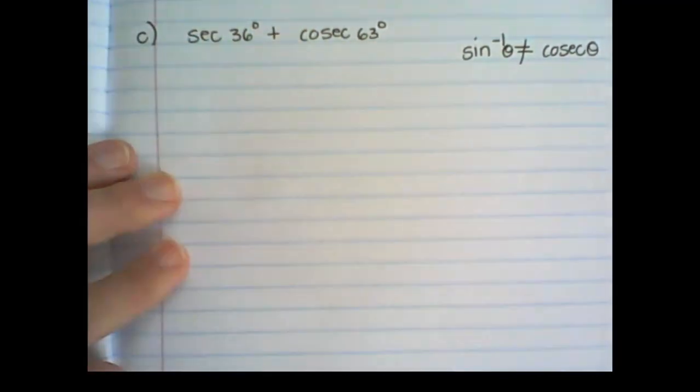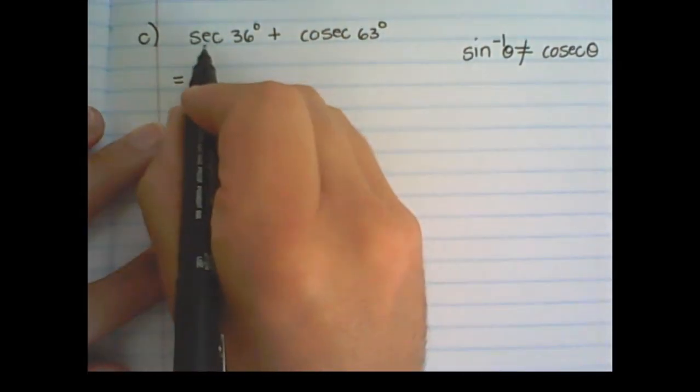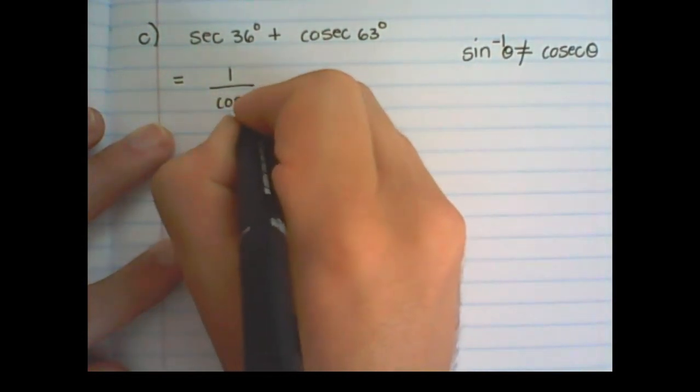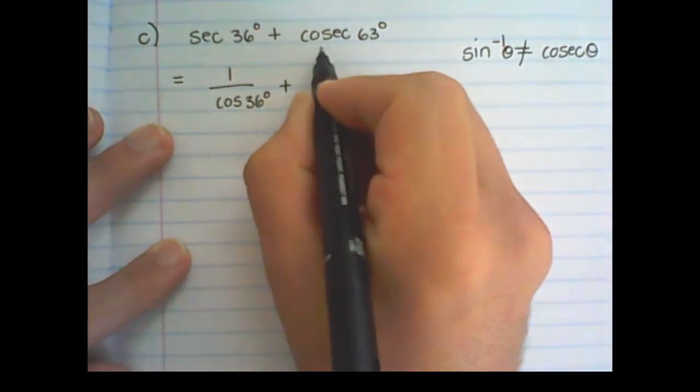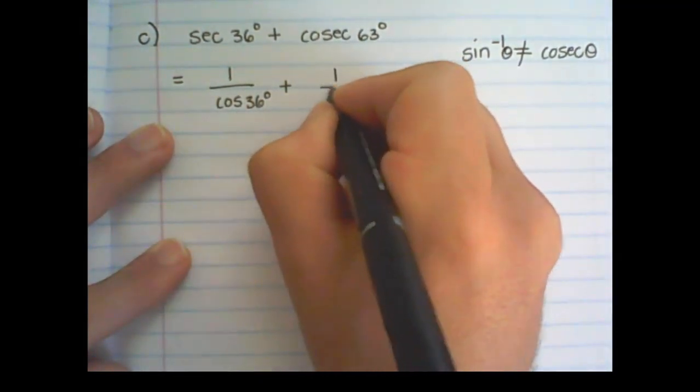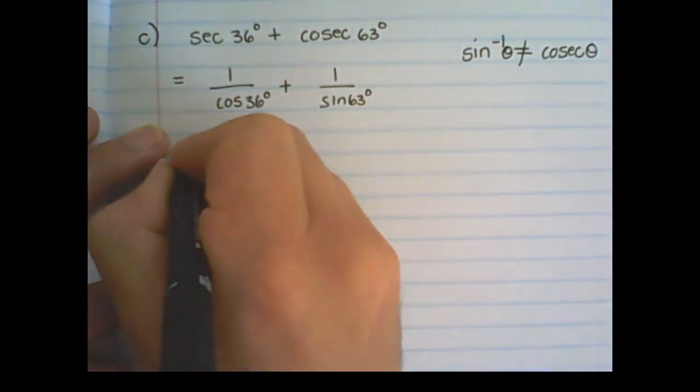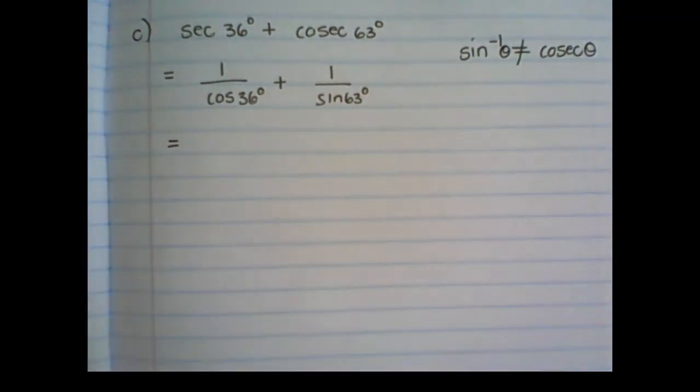So here's what we do. Sec of 36 is 1 over cos of 36 degrees, and cosec of 63 is 1 over sine of 63 degrees.